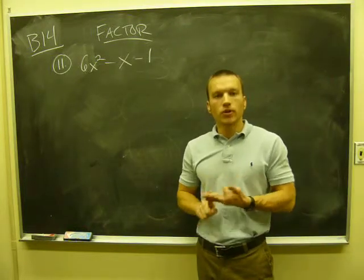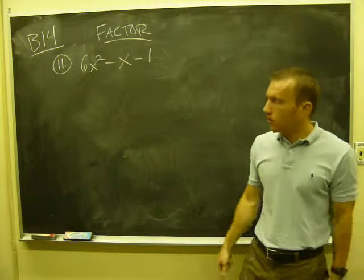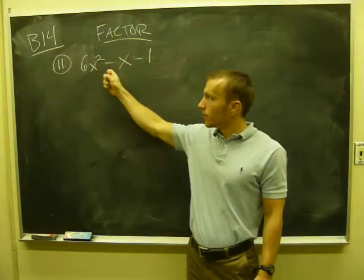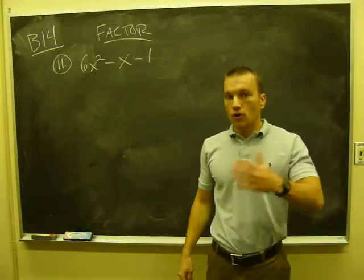Again, there's three things we're looking for when we factor. The first thing we always look for is the greatest common factor. I look at this and say there's no greatest common factor here. There's no number I can factor out of all three of this. So no greatest common factor.